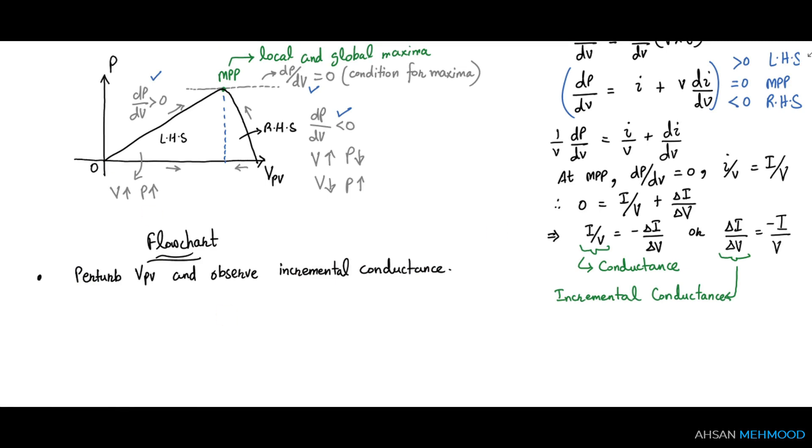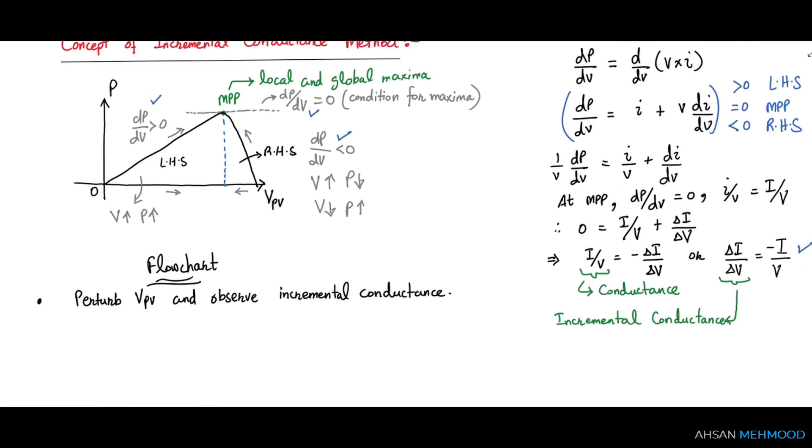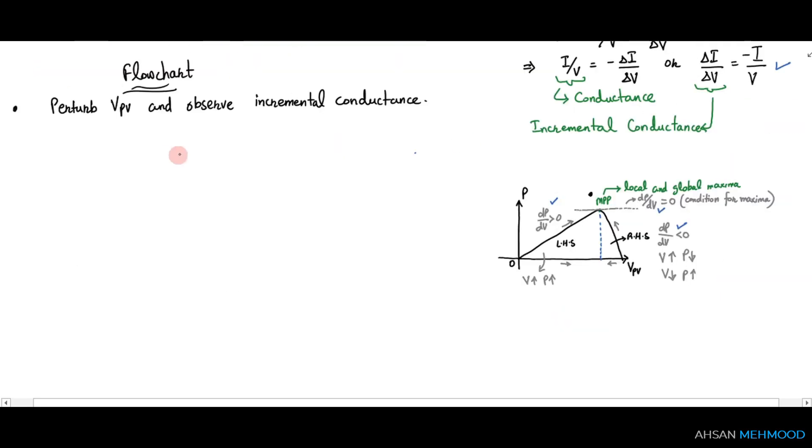Let's see how we can use this equation to reach the maximum power. The first step is to take the voltage and current samples, v(k) and i(k) respectively. Then we can find delta i by subtracting the previous sample i(k-1) from the present sample i(k). We can calculate delta v as v(k) minus v(k-1).